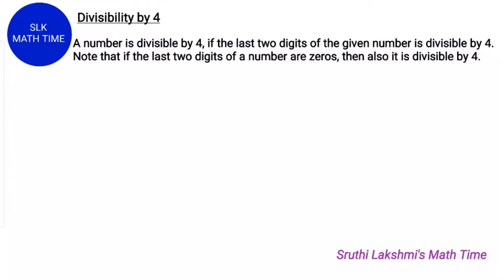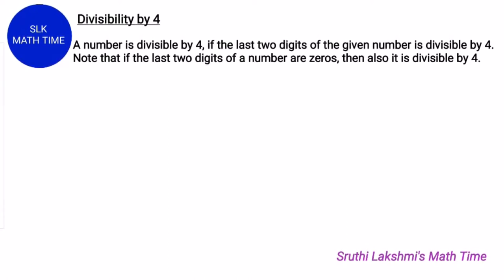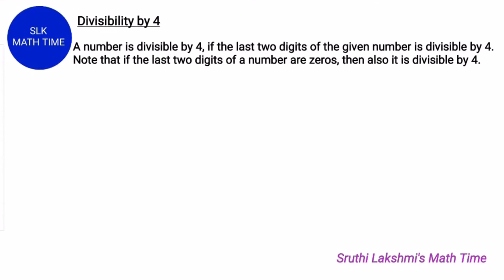Now let's see the divisibility rule for 4. A number is divisible by 4 if the last two digits are divisible by 4. Also remember that if the last two digits of that number are 0s, then it is also divisible by 4. Let's see an example.